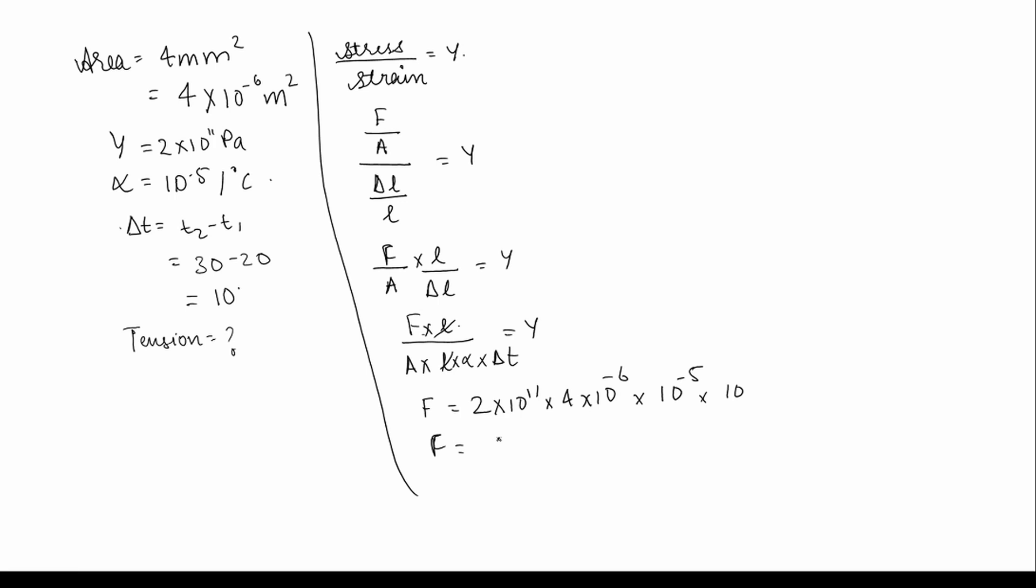This and these both will get cancelled. So force of the tension in the string is 2 × 4 is 8 × 10¹¹ and 10⁻⁶ × 10⁻⁵ is 10⁻¹¹. This and these both will get cancelled. Remaining is 10. So force of the tension in string is 18 N. So the option is C.